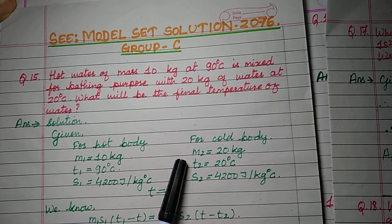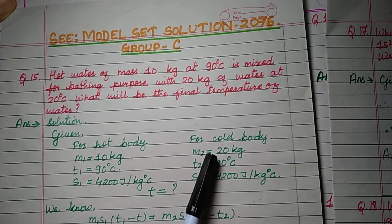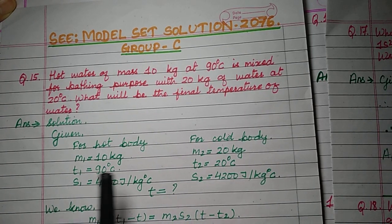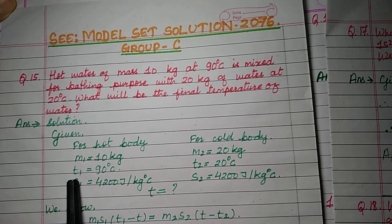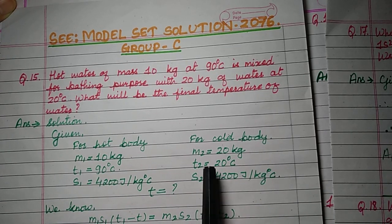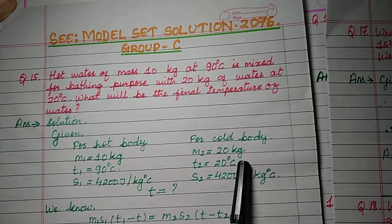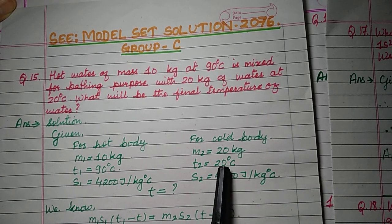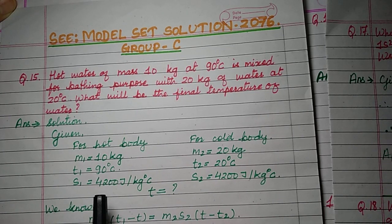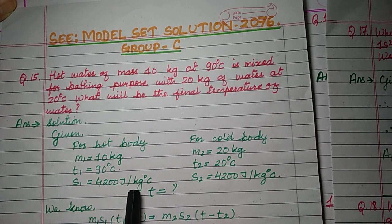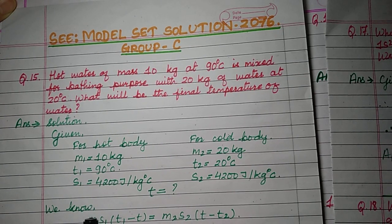The mass of the hot body, m1, is 10 kg. The mass of the cold body, m2, is 20 kg. The higher temperature of hot water, t1, is 90 degrees Celsius and the lower temperature of cold body, t2, is 20 degrees Celsius. The specific heat capacity in both cases is water: 4200 J/kg°C.